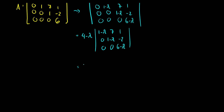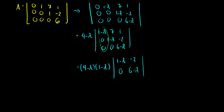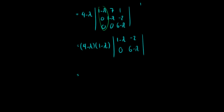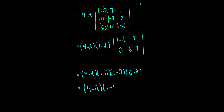Now doing cofactor expansion across this column, we get (4 minus lambda) multiplied by (1 minus lambda) times the determinant of the 2x2 matrix [[1 minus lambda, negative 2], [0, 6 minus lambda]]. Finding that determinant, we get (4 minus lambda)(1 minus lambda) times [(1 minus lambda)(6 minus lambda) minus (negative 2)(0)], which simplifies to (4 minus lambda)(1 minus lambda) squared (6 minus lambda), giving eigenvalues 4, 1, 1, and 6.